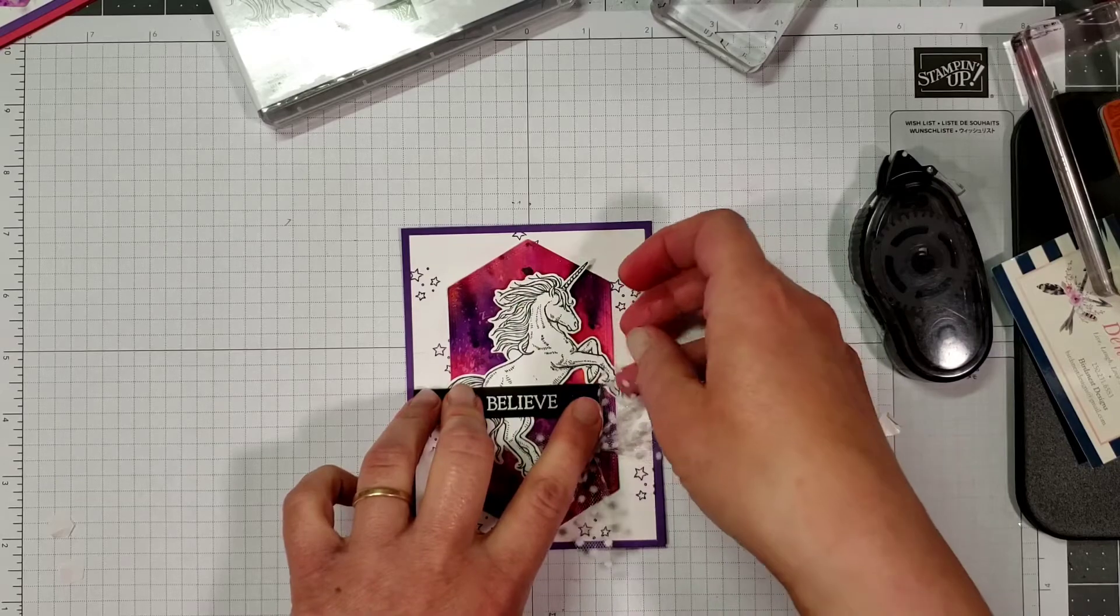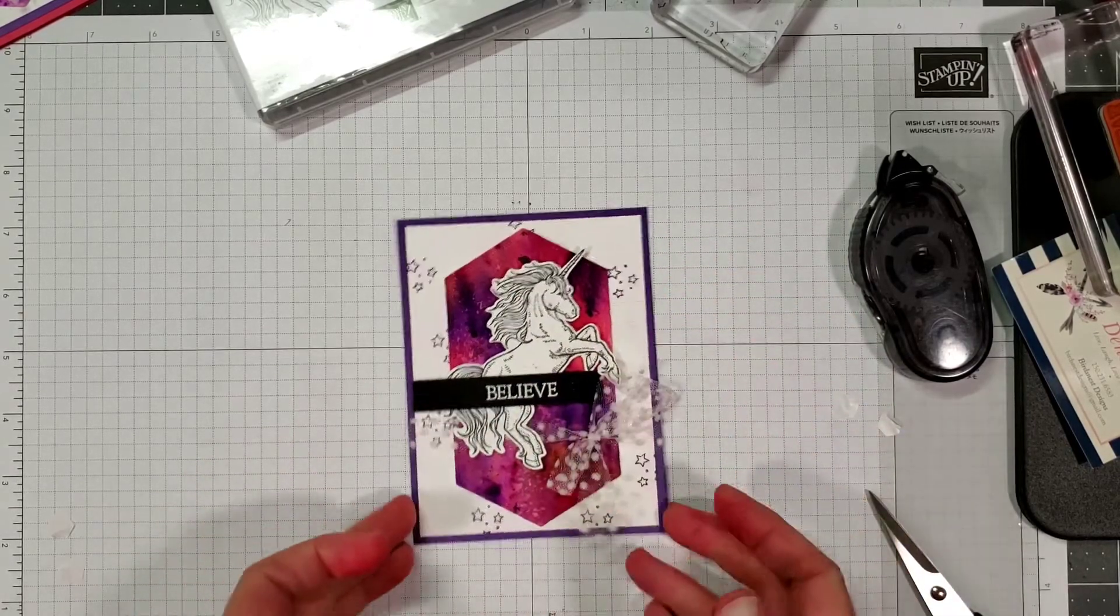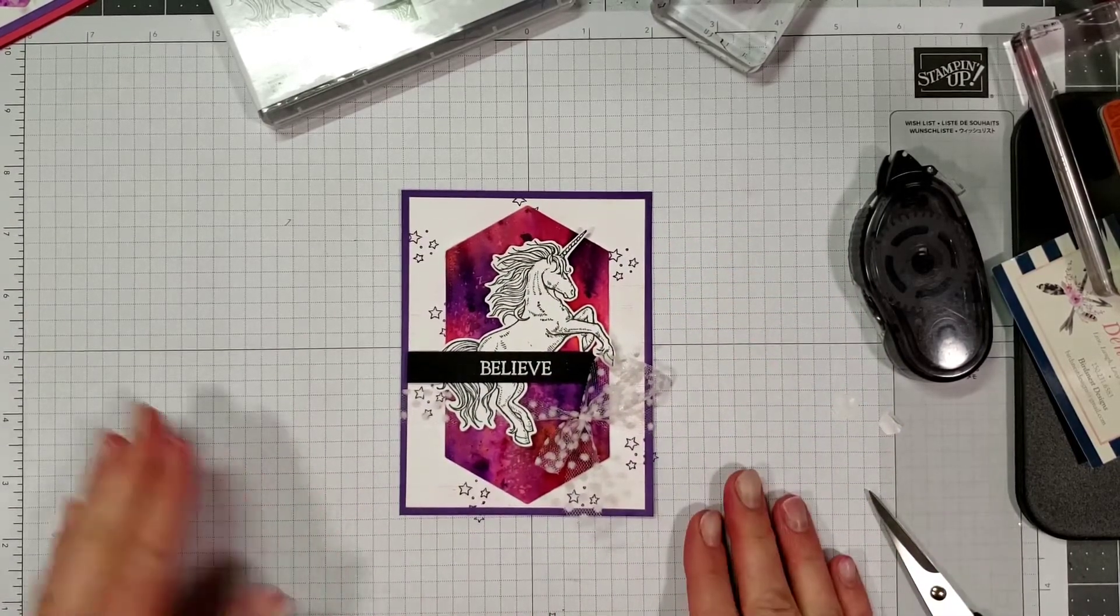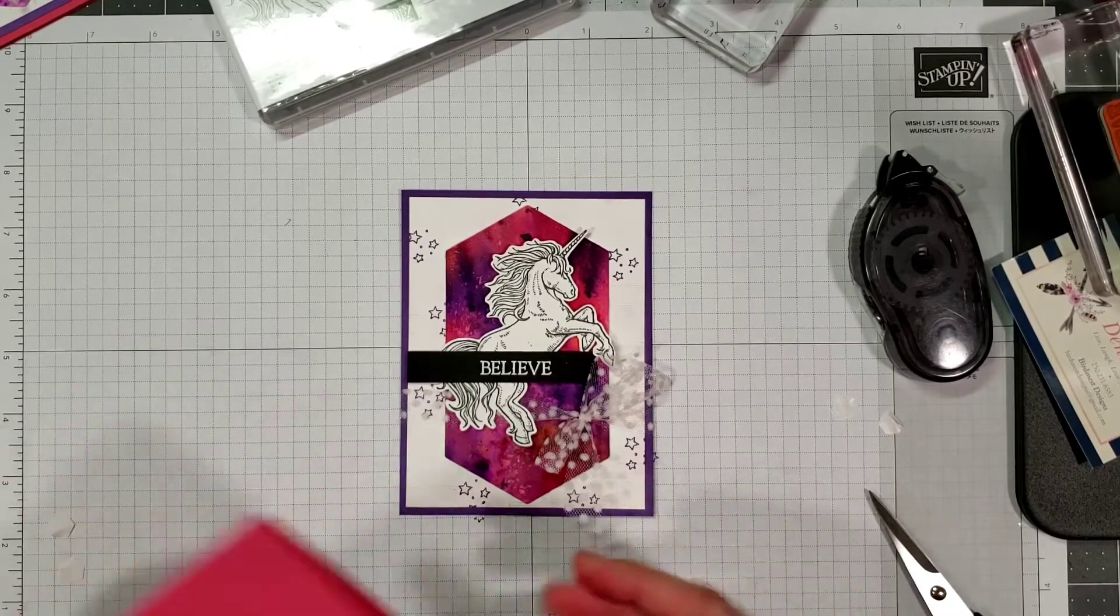And then just sort of tuck it in underneath here like so. So we've got that part done. We're going to take our melon mambo card base.